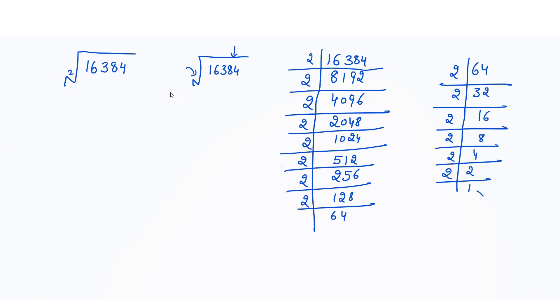Now we have got 1 here, so the prime factorization for this number is done. Since we are calculating the square root and we have 2 here, that means we have to make sets of 2 same numbers.